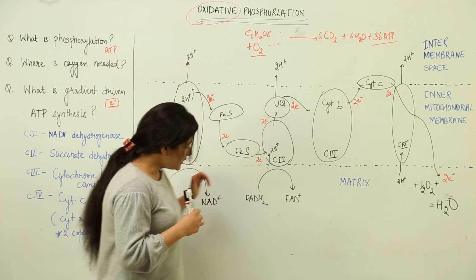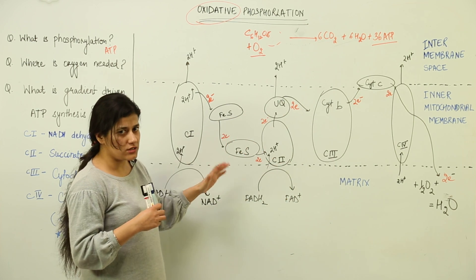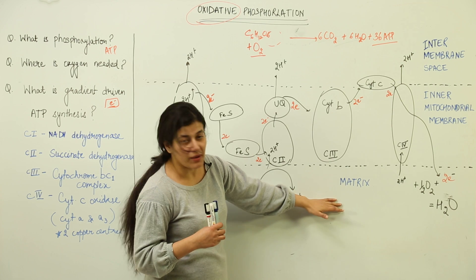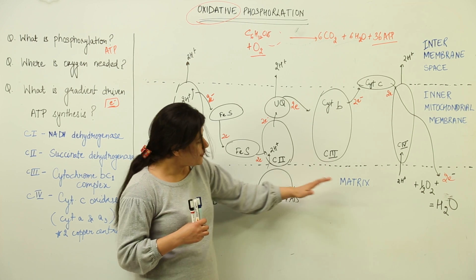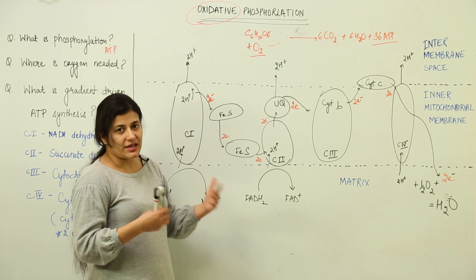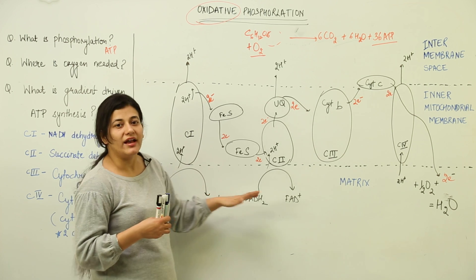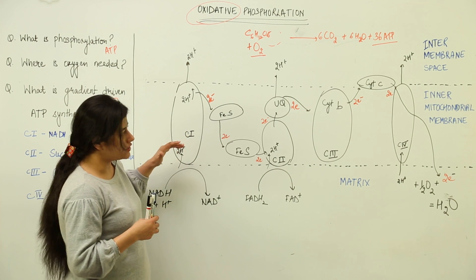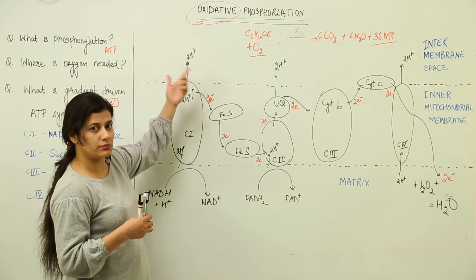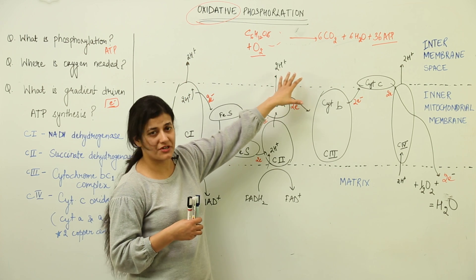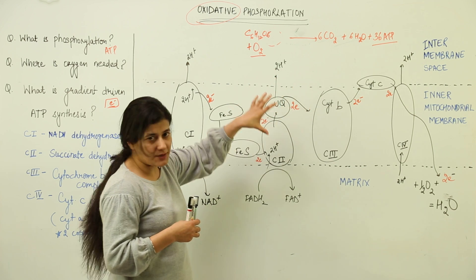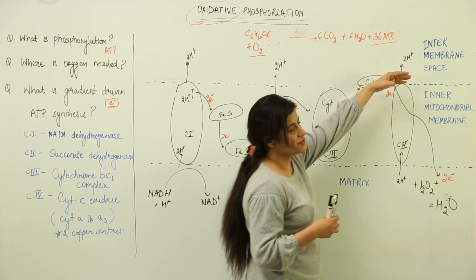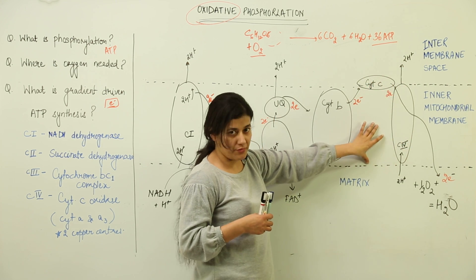Coming back to eukaryotes — consider the mitochondria. The matrix is where the Krebs cycle takes place. Mitochondria is a double-membrane-bound structure with an inner mitochondrial membrane, an outer mitochondrial membrane, and an intermembrane space in between. We are considering the matrix in association with the inner mitochondrial membrane and the intermembrane space.